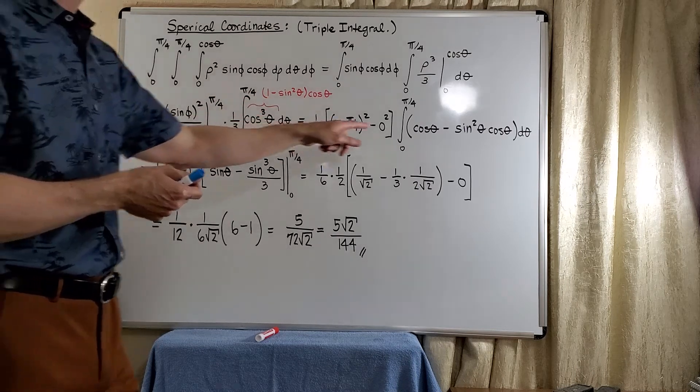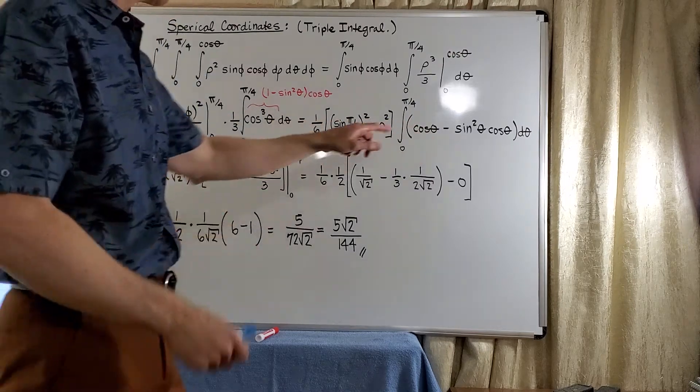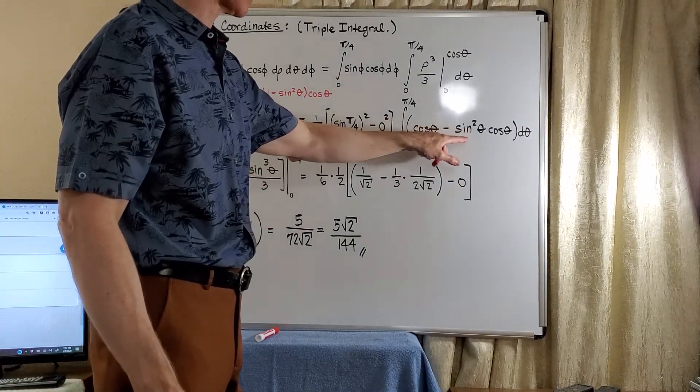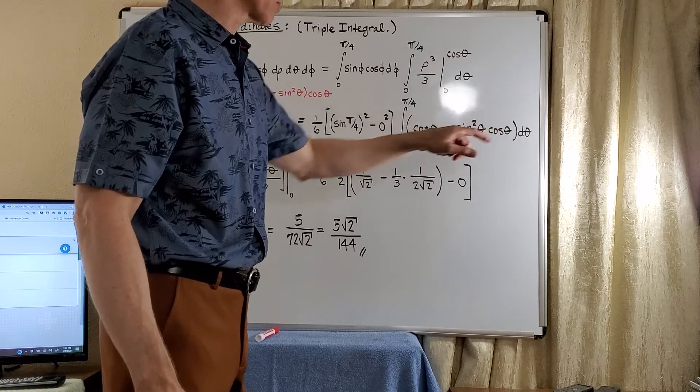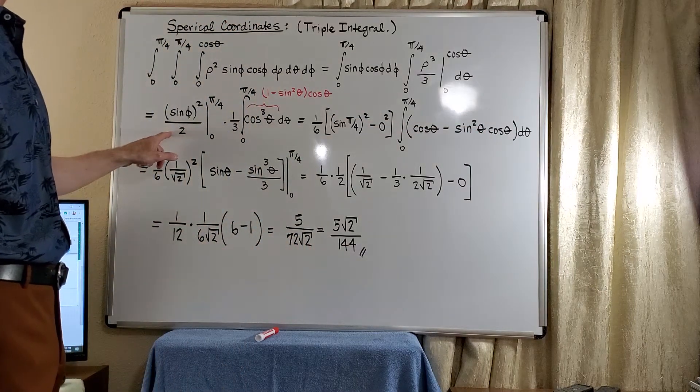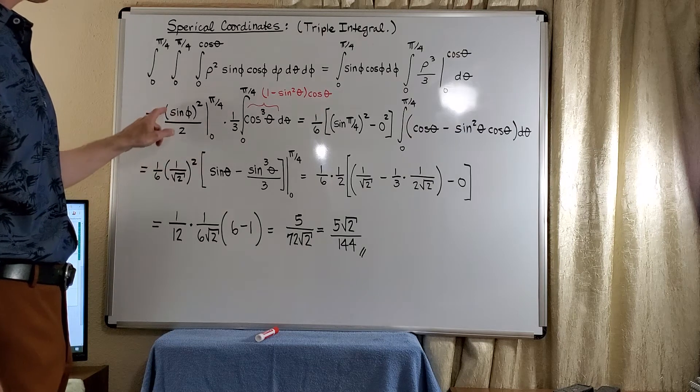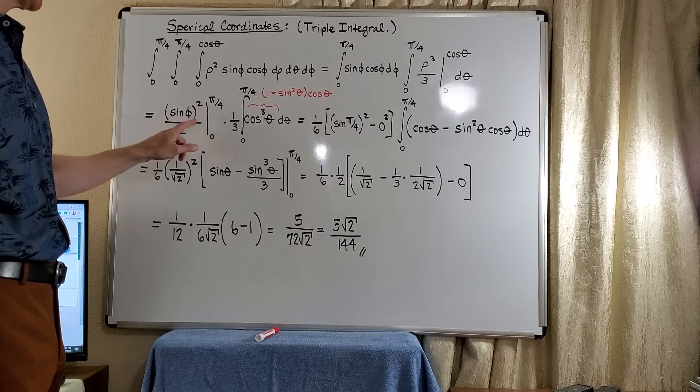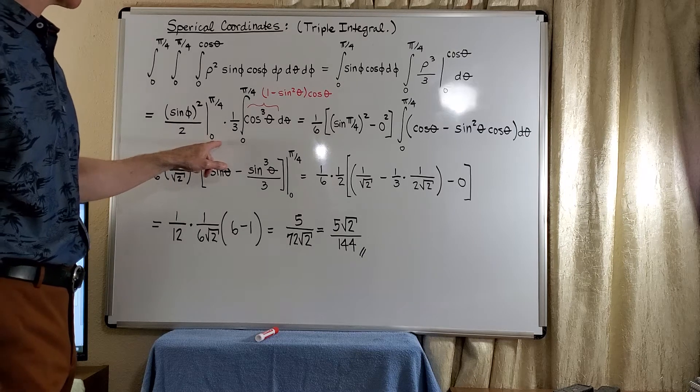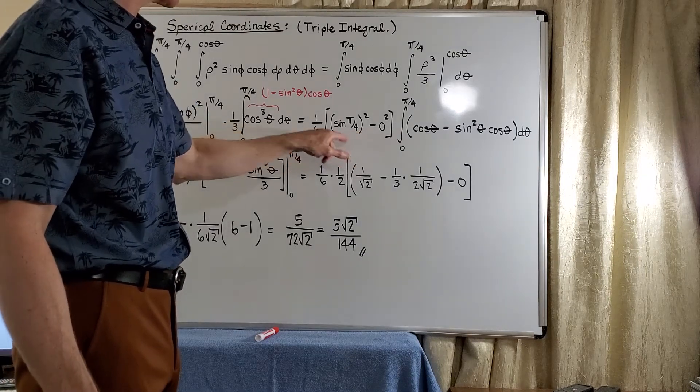So when we move to the next integral, we have cosine theta minus sine squared times cosine theta. Now, for the first integral, we just simply substitute the pi over 4 into our integrand. And then of course, the 0 gives us nothing but 0.